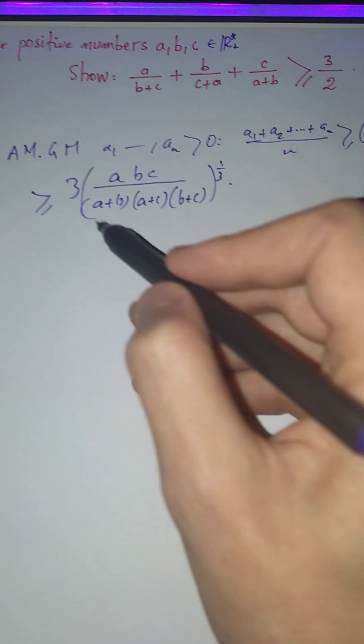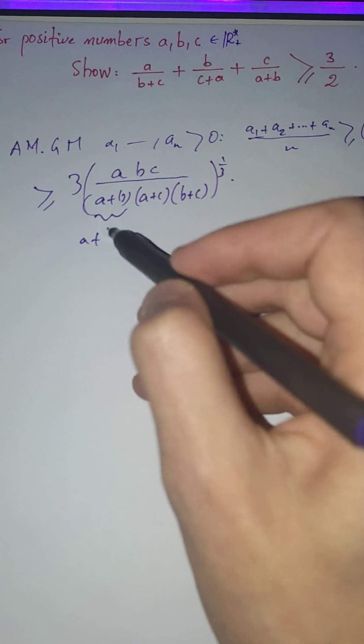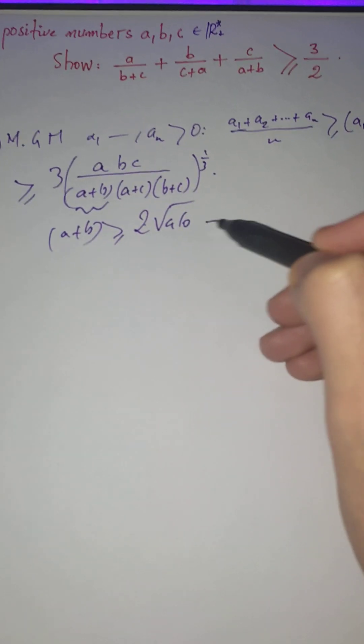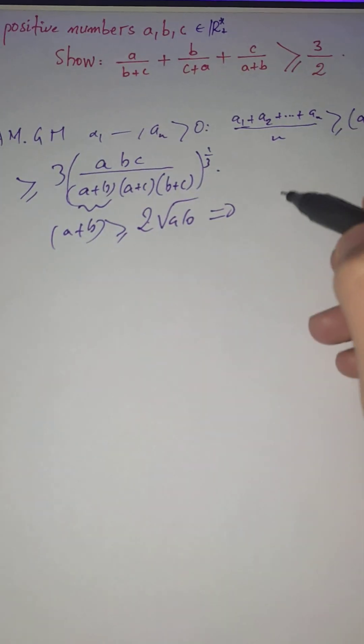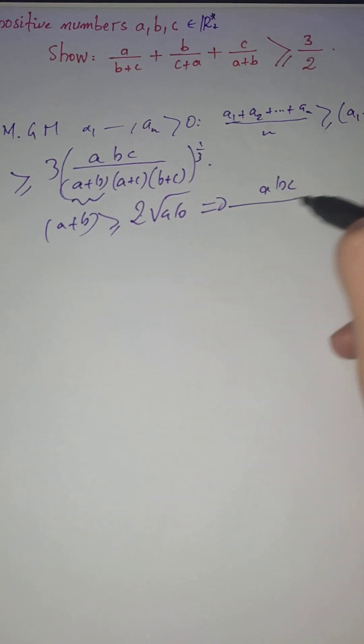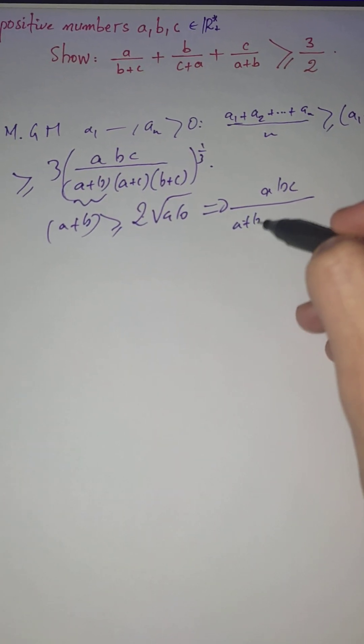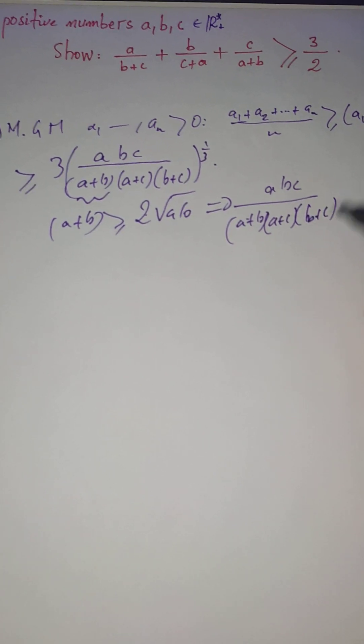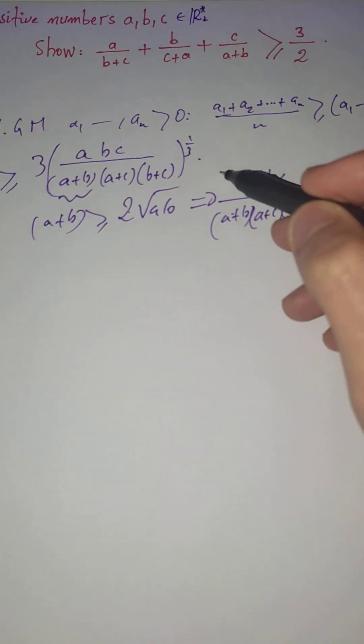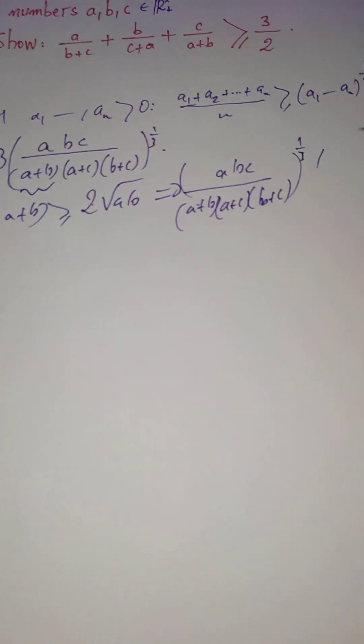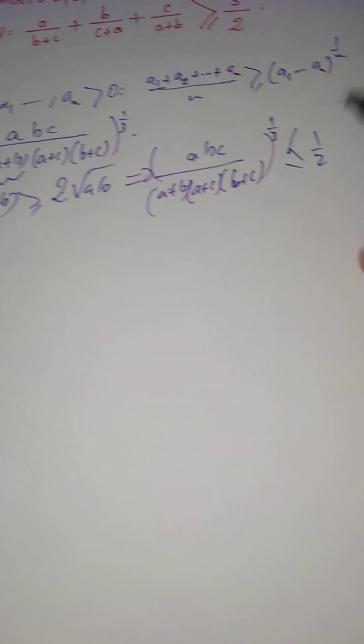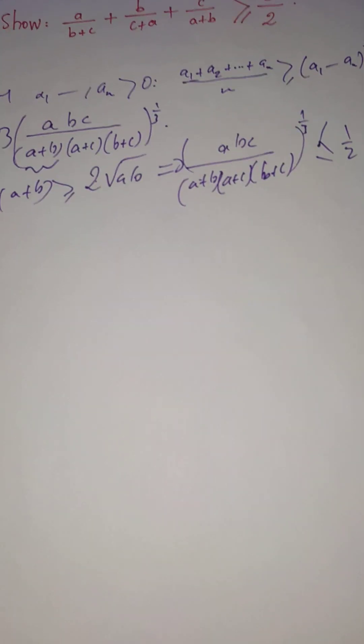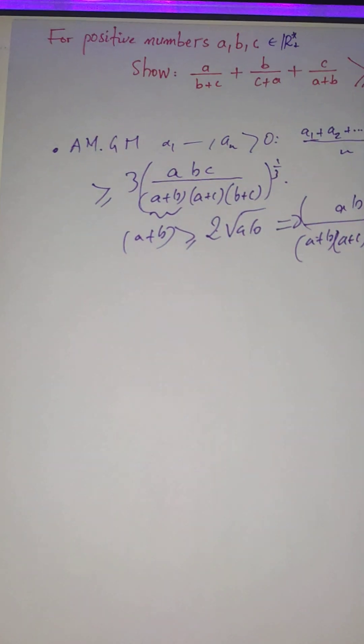And using the same thing here, we can say a plus b is bigger than 2 square root of ab, therefore, what we can conclude is that this number, abc over (a plus b)(a plus c)(b plus c), is smaller. So what we get is that this number is smaller than 3 over 2, which is not what we are looking for. So this does not work.